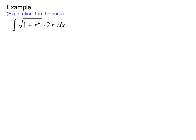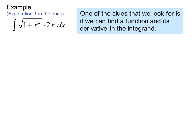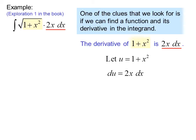Example. This was exploration 1 in some calculus book. The integral of the square root of 1 plus x squared times 2x dx. One of the clues that we look for is if we can find a function and its derivative in the integrand. The derivative of 1 plus x squared is 2x dx. So we let u equal 1 plus x squared and du equal 2x dx.